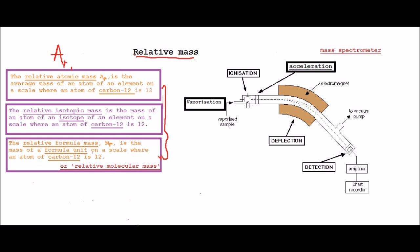So that's basically all the definitions you need to know, and we'll just go over how you figure out MR. For example, we could have C2H6O.